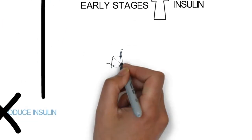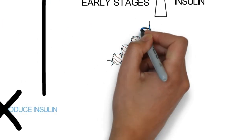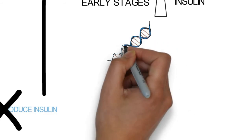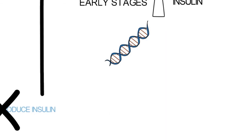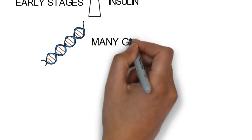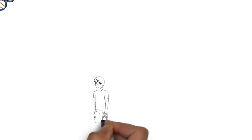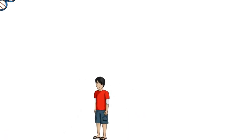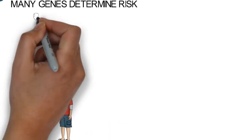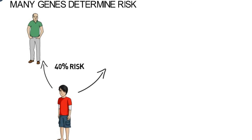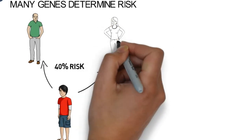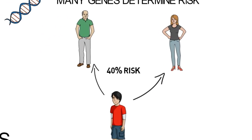As with type 1 diabetes, there are several genetic mutations associated with the development of type 2 diabetes. However, type 2 diabetes has a much stronger genetic component when compared to type 1. For example, if an individual has a parent with type 2 diabetes, that person has about a 40% chance of developing type 2 diabetes. But if both parents have type 2 diabetes, the risk increases drastically up to 80 to 90%.